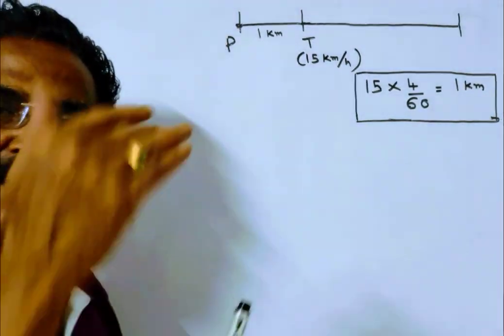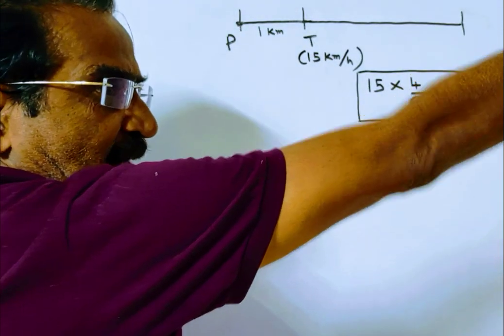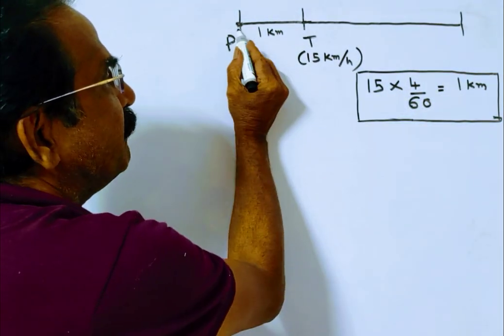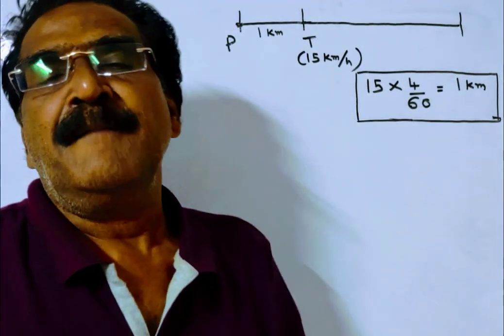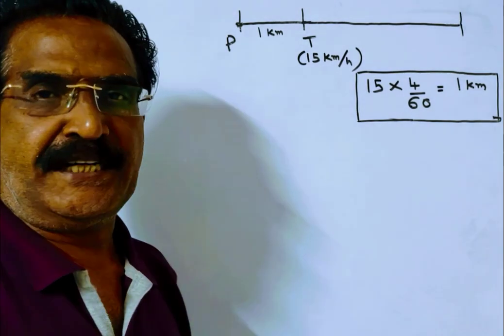So by the time the police arrived at the spot, the thief had traveled 1 km. The distance between the police and the thief is 1 km. Now the chasing process started.